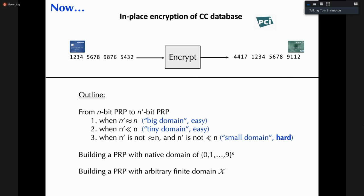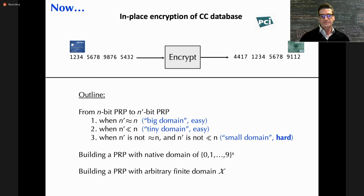Once we figure out the small domain case, we step back and ask: what if we want a PRP whose native domain is not bit strings but decimal strings — the set of digits zero through nine raised to the s? If s equals 16, we're talking about strings that could be credit card numbers. From there, we generalize to build PRPs over arbitrary finite domains.